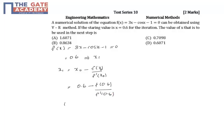f of 0.6, you will have 3 into 0.6 minus cos 0.6 minus 1. You will have the value of minus 0.025.